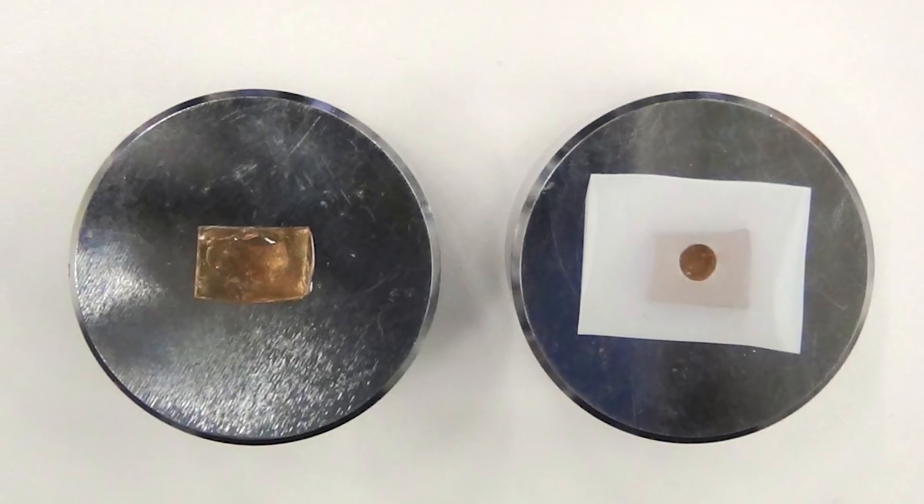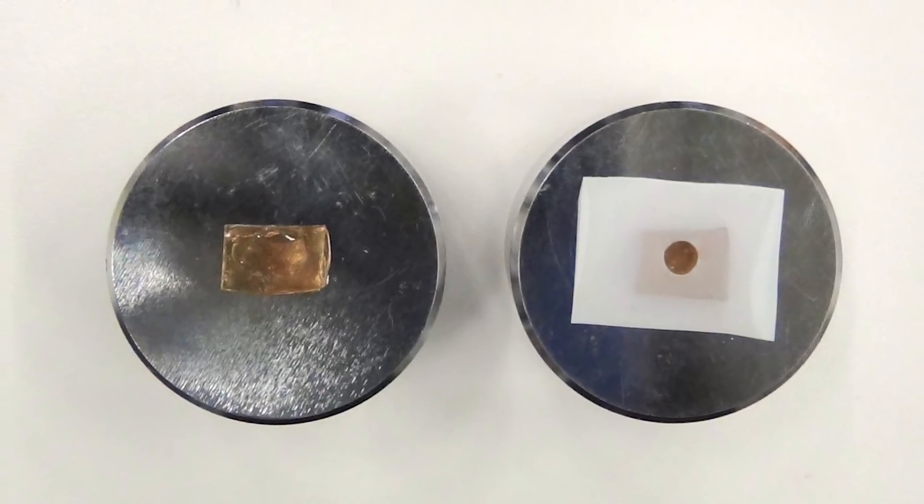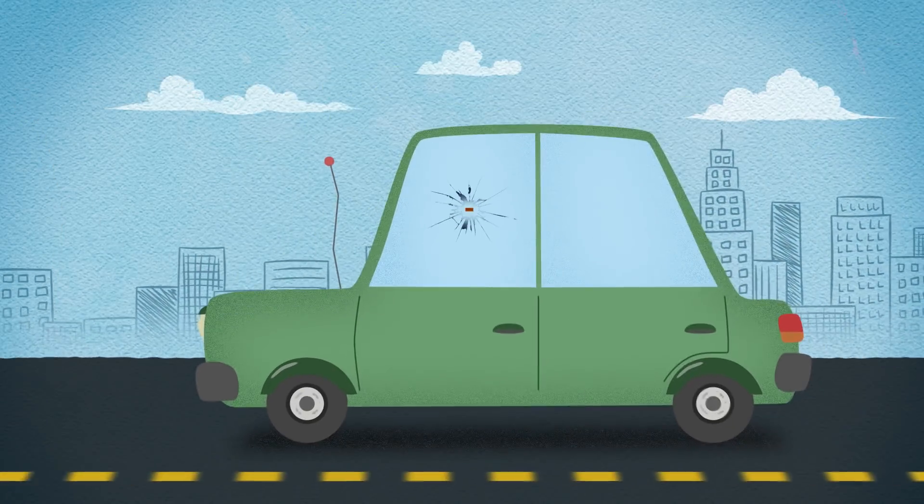In the future, this rigid polymer could be used to make robots and other technology that can be easily repaired, and maybe even let you fix a broken window.